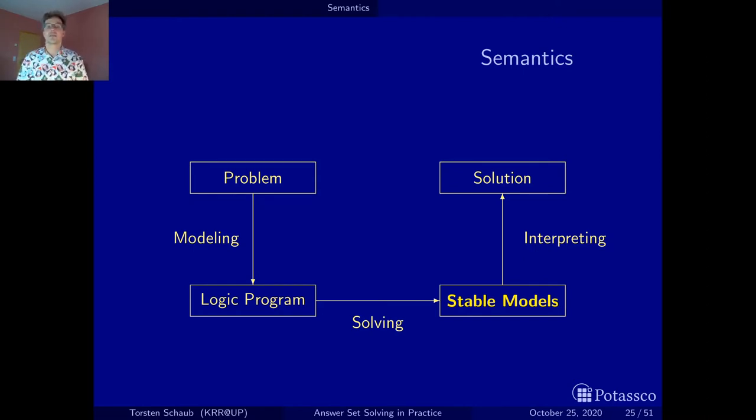The idea of this semantics is, once you have formulated your problem as a logic program, then you can associate with this logic program several stable models. Each stable model will represent an alternative solution to your original problem. Take, for instance, timetabling at university. You write the rules of your timetabling problem, you push the button and get an arbitrary number of stable models out. Each stable model is an alternative solution, an alternative timetable for your original problem.